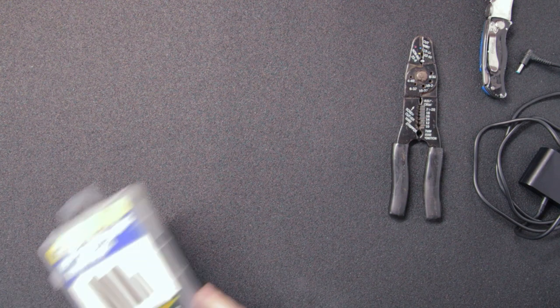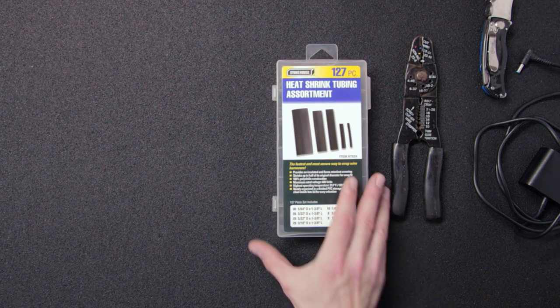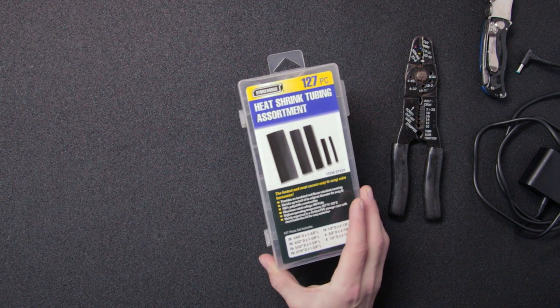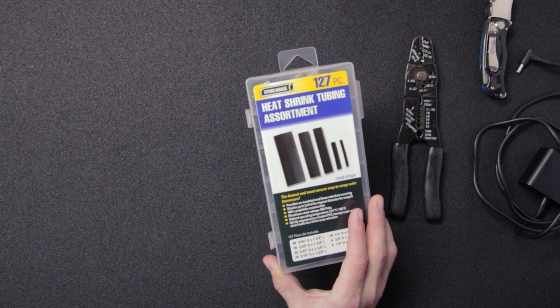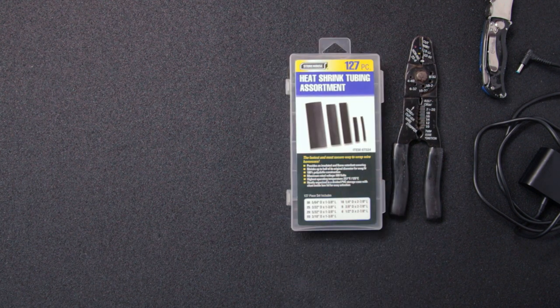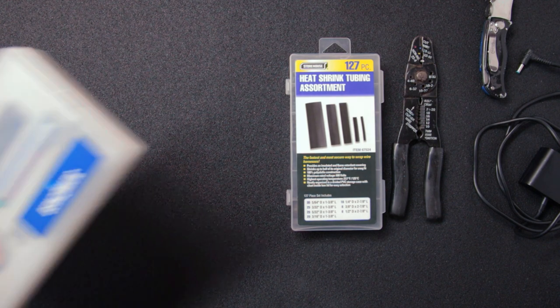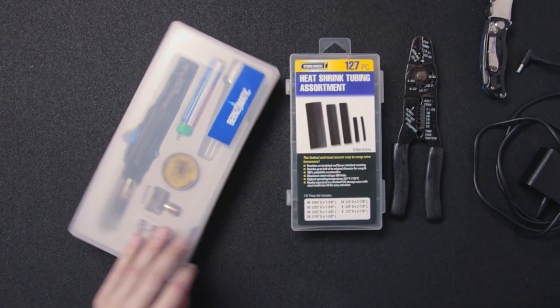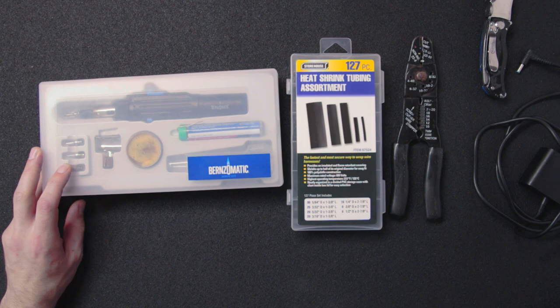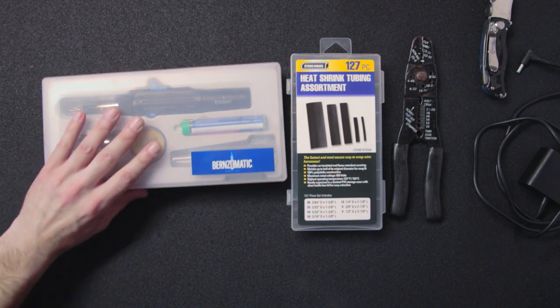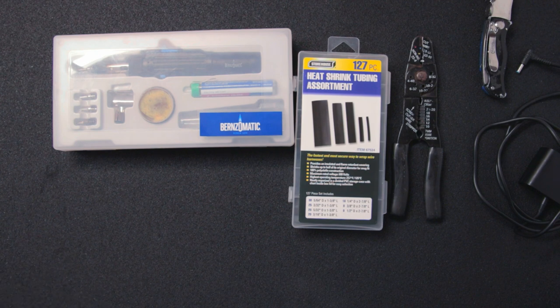Next thing you'll need heat shrink tubing. 127 pieces I got for four bucks, $4.50 I think at Harbor Freight, but pretty much anywhere sells them. And got yourself a soldering kit. This is a gas powered soldering kit. I do not necessarily prefer it over an electric. I'll explain why when I'm doing the actual repair, why I don't like them for this specific application.